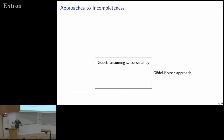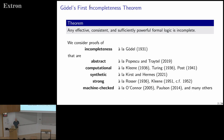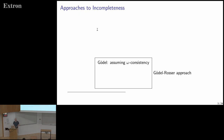Gödel proved his first incompleteness theorem in 1931. The main point where the statement can be strengthened is in the requirements on the formal system shown to be incomplete. The consistency requirement was originally stronger: Gödel's original proof did not show incompleteness of all consistent, effective, and sufficiently powerful formal logics, but just of omega-consistent formal logics.